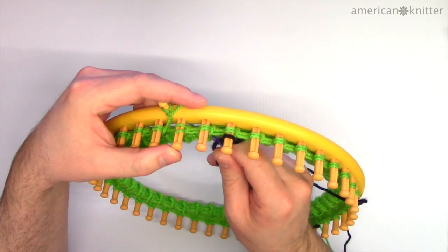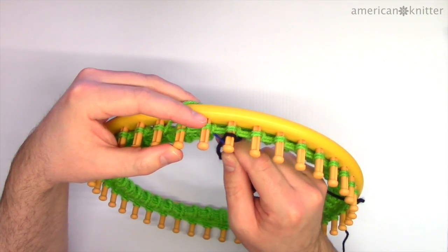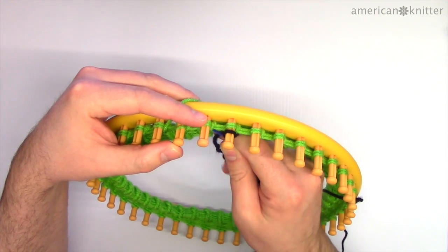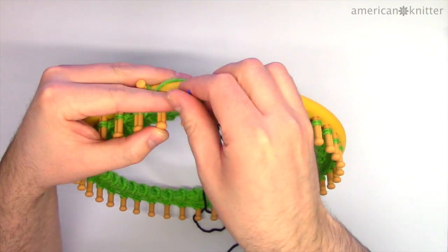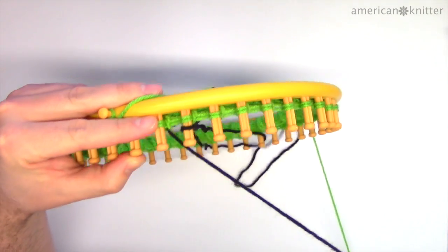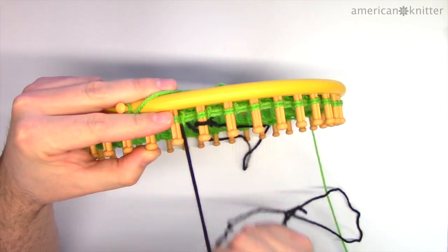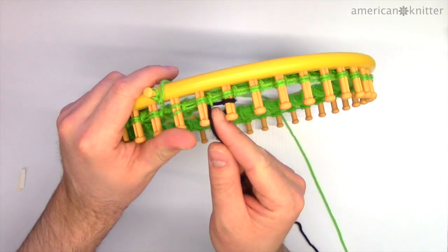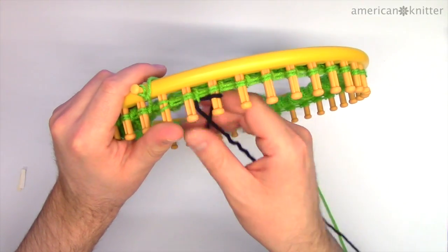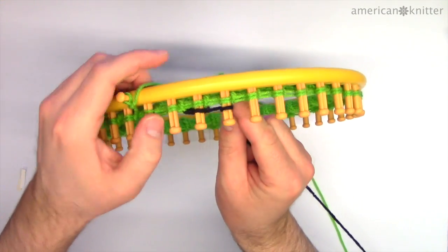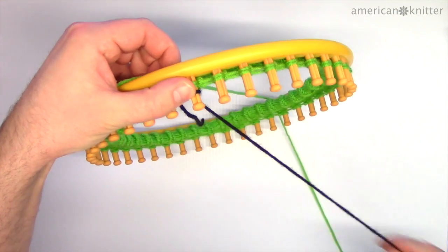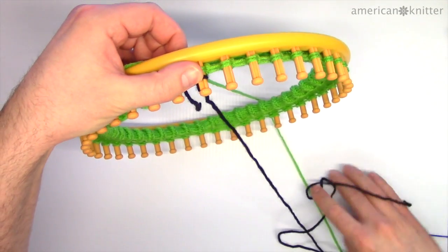Thread the black yarn through the last stitch that was picked off from the second peg, like this. This integrates the black yarn into the stitches of the rest of the hat. This is very important if you want your beanie to turn out right and look good. With the black yarn secured to the green, we're now ready to wrap the pegs according to the pattern with the black yarn. We'll be counting the slipknot as a wrap, so now we'll wrap the fourth peg.